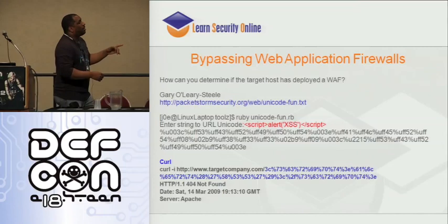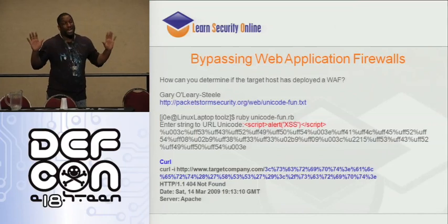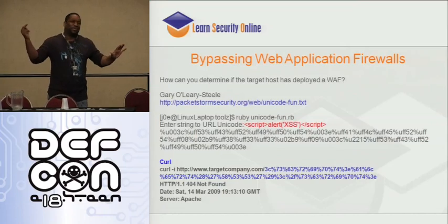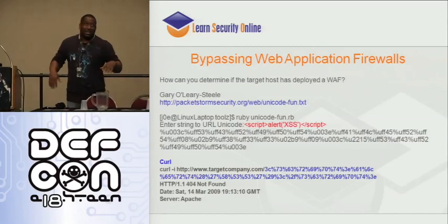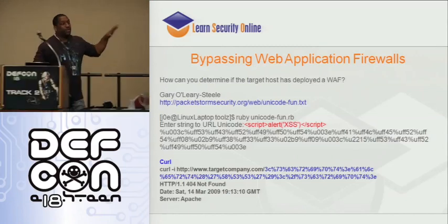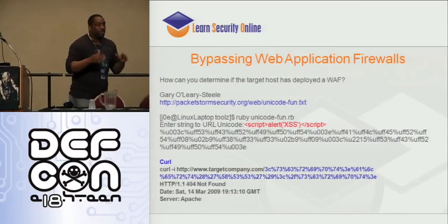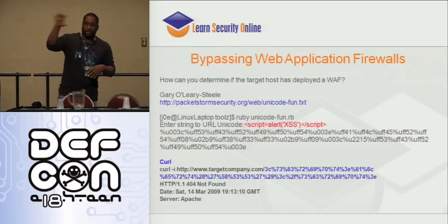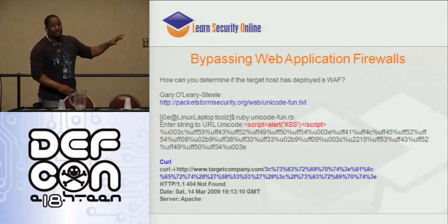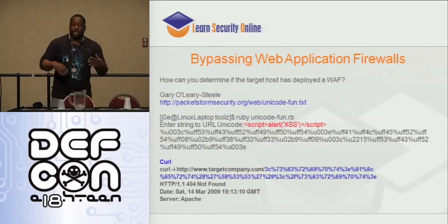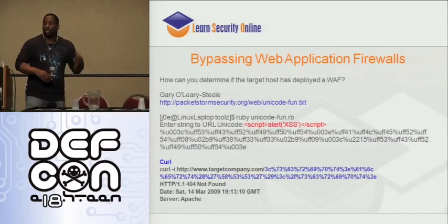Gary O'Leary-Steel wrote a tool called Unicode Fun, and it's great. It's Ruby, but we're going to get that moved over to Python. We want to make a tool specifically for web application attacks that's going to be part of the WAF It framework. WAF It framework will include WAF Fun and WAF Woof, and we'll specifically be working on multiple encodings and proxy awareness so that it can jump on Tor and Glip proxies.